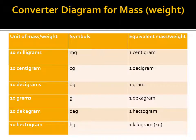Now we have the converter diagram for mass or weight. The unit of mass uses grams — just as length uses meters and volume uses liters. The mass units are: 10 milligrams (mg) = 1 centigram (cg); 10 centigrams = 1 decigram; 10 decigrams = 1 gram; 10 grams = 1 dekagram; 10 dekagrams = 1 hectogram; 10 hectograms = 1 kilogram.